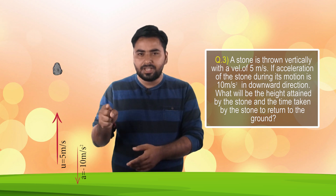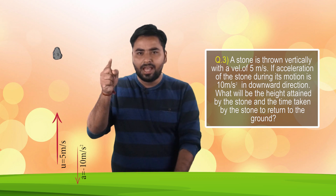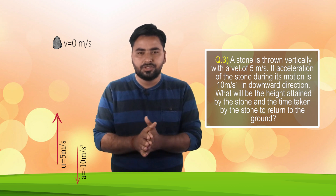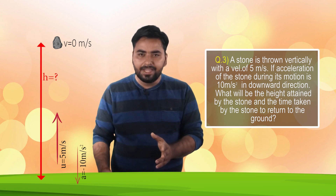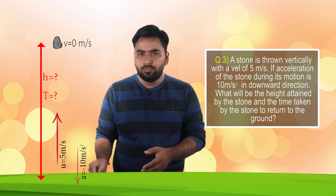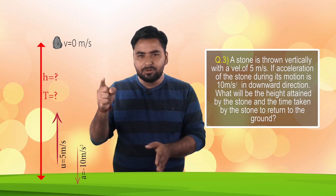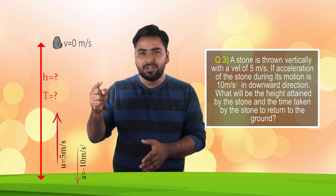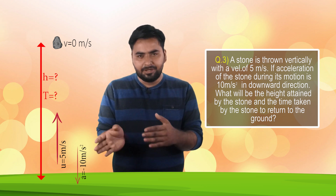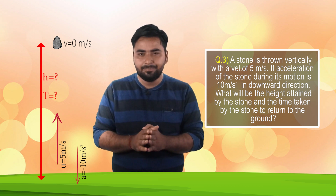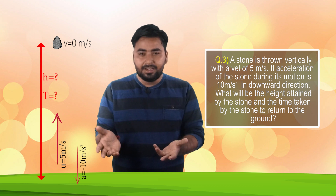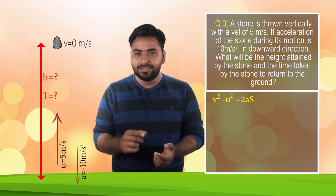As the stone goes up, acceleration acts downward. At the topmost point, the final speed v equals 0 meters per second. We need to find the height s and the total time. The time to go up will equal the time to come down, so total time is double the time going up. For height, we will use the formula v squared minus u squared equals 2as.